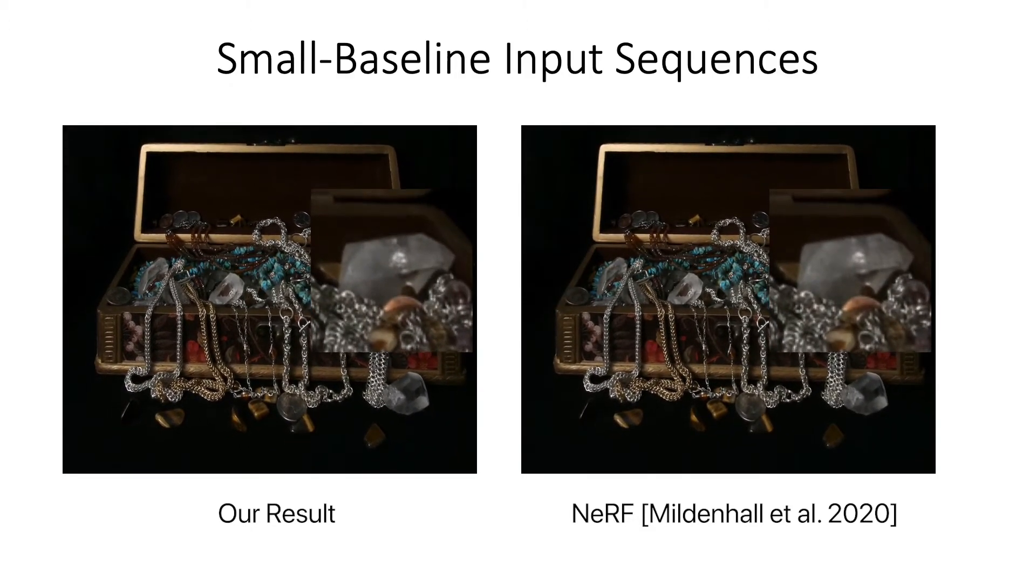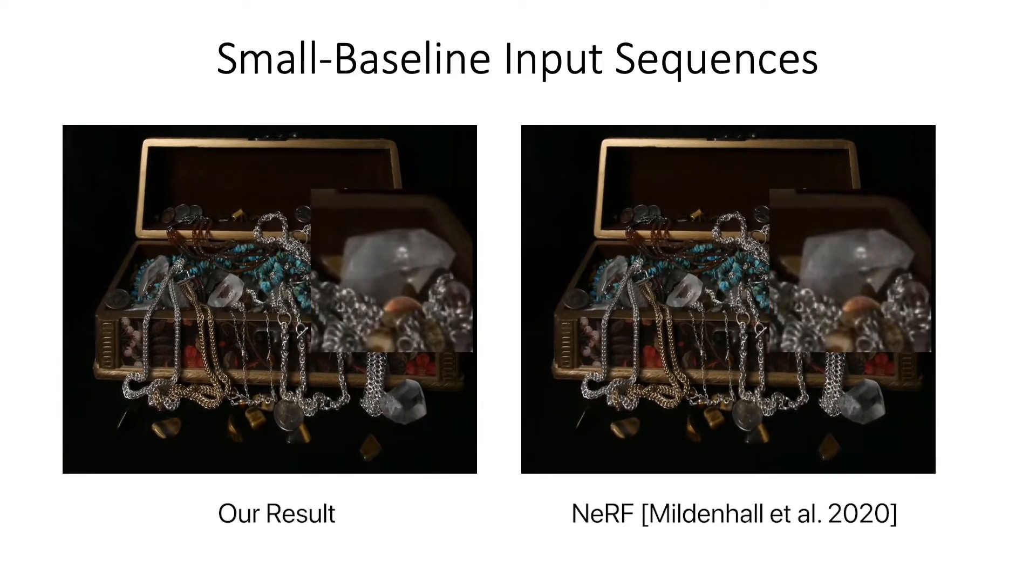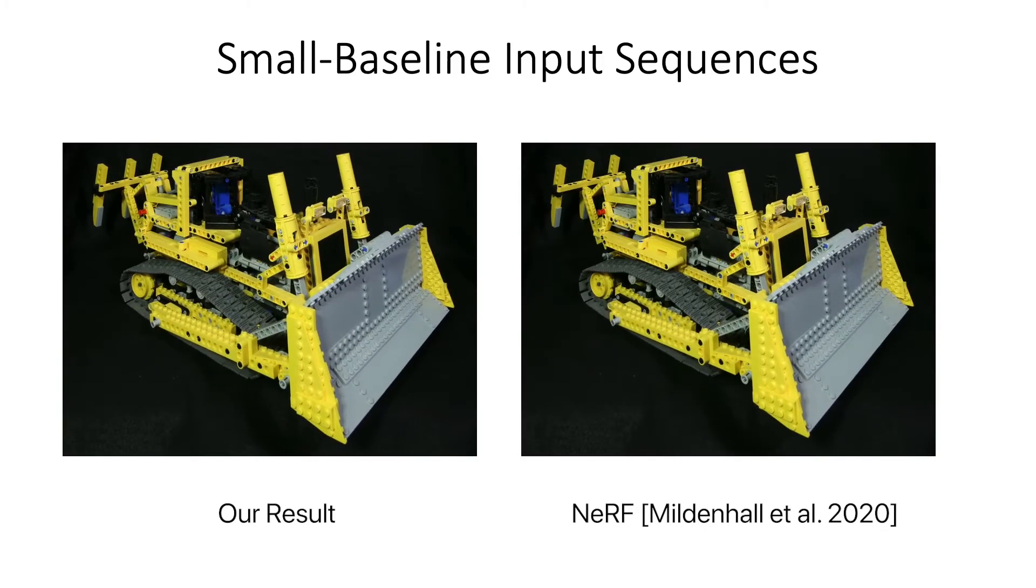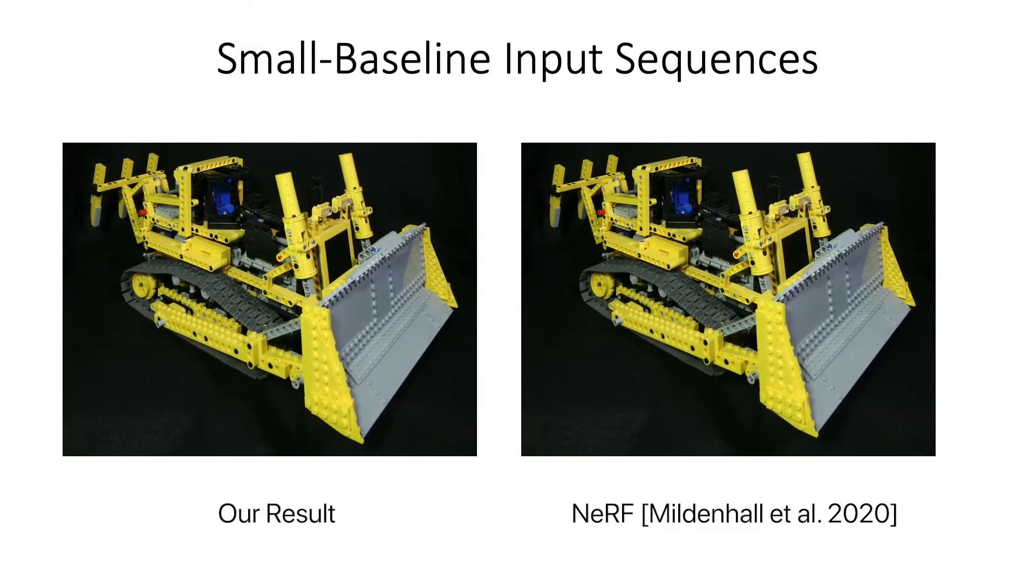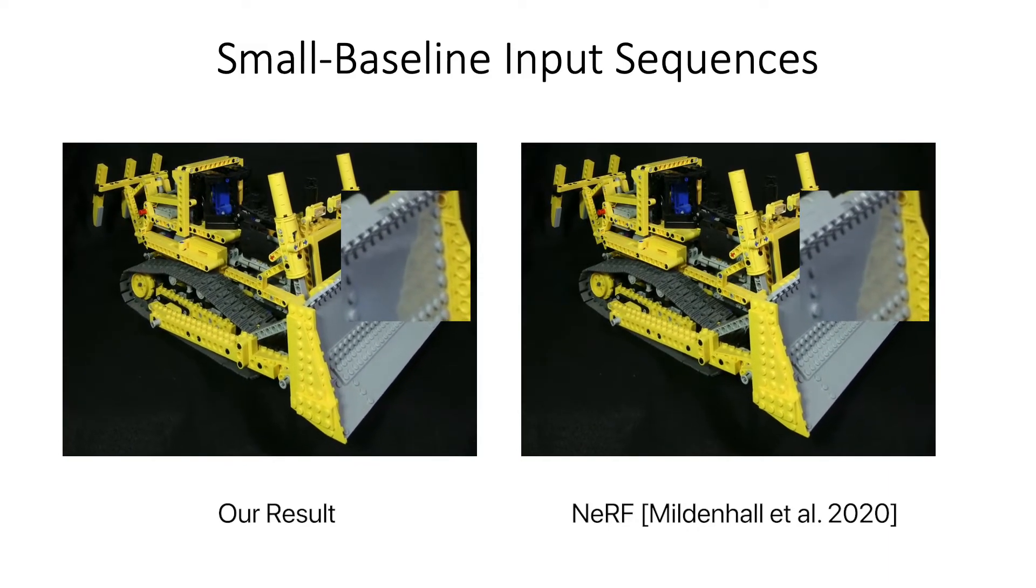Additionally, since our network does not explicitly represent scene geometry, it can reproduce view-dependent effects, such as reflections and refractions, better than existing approaches for view synthesis.